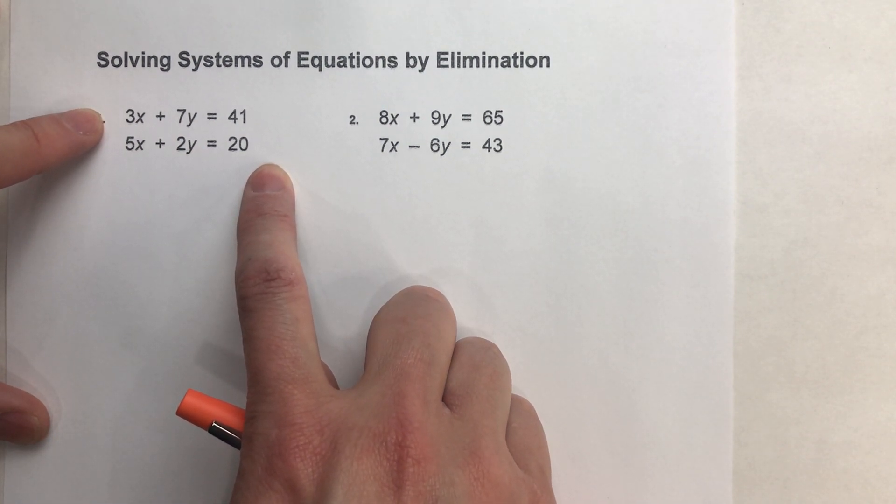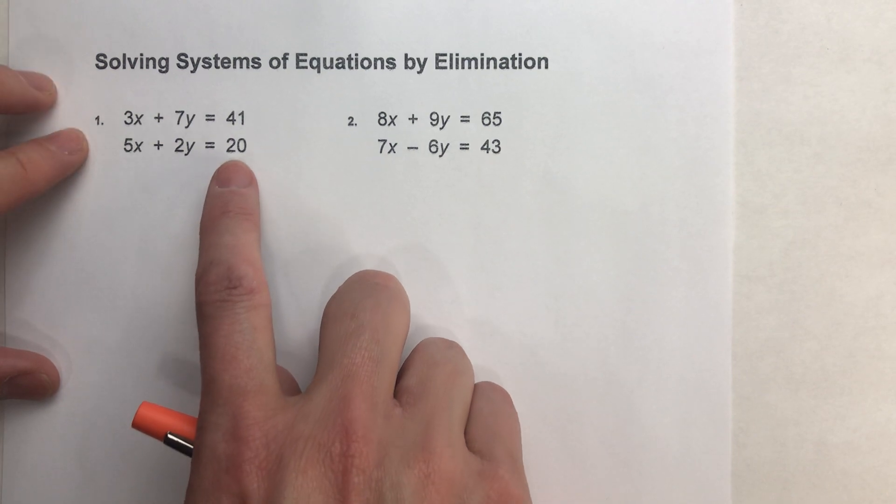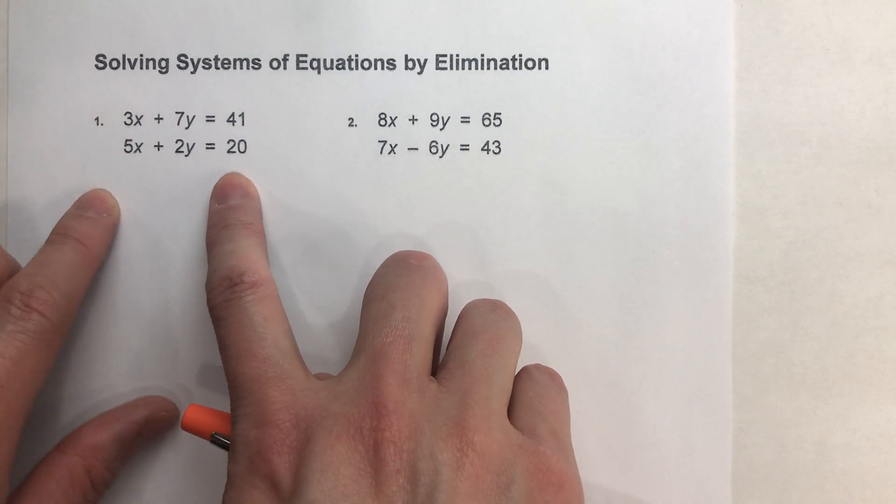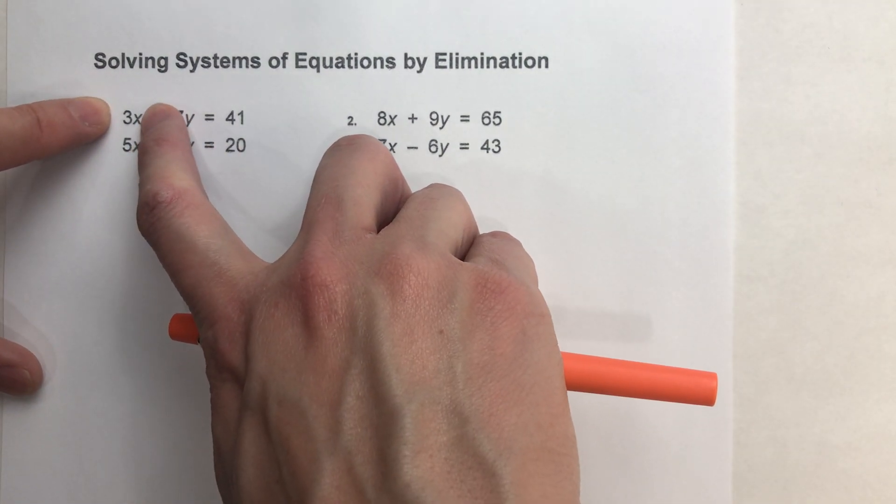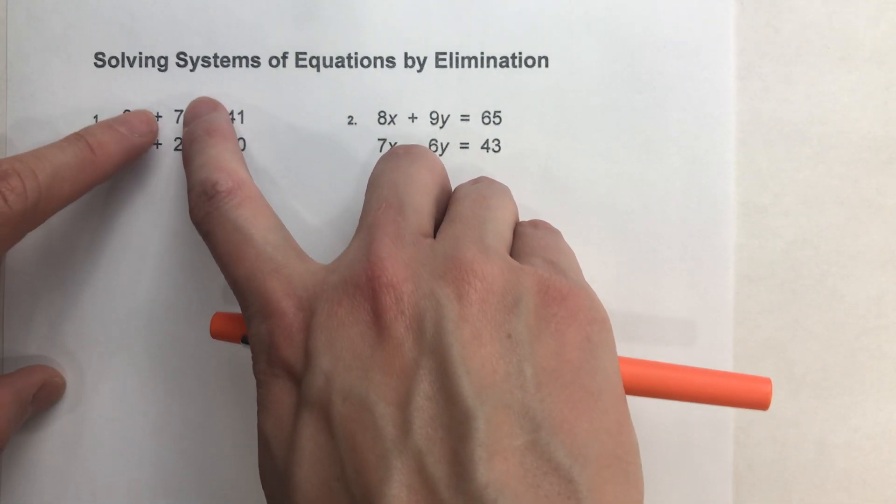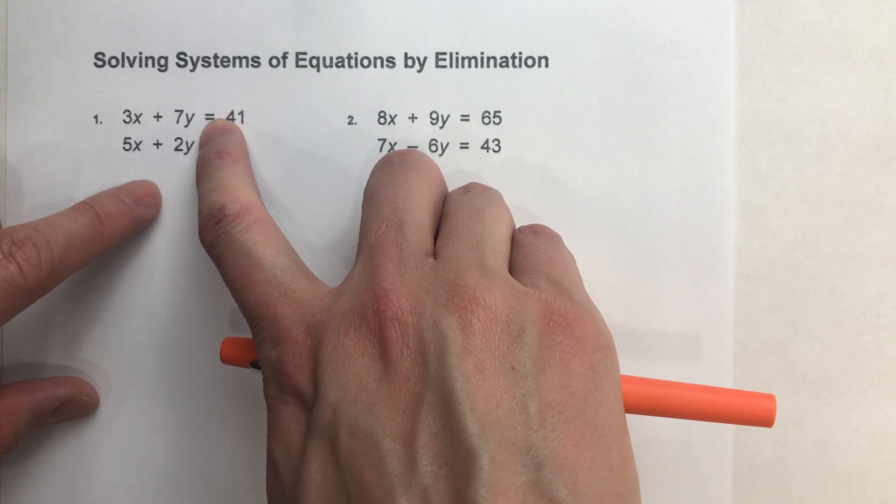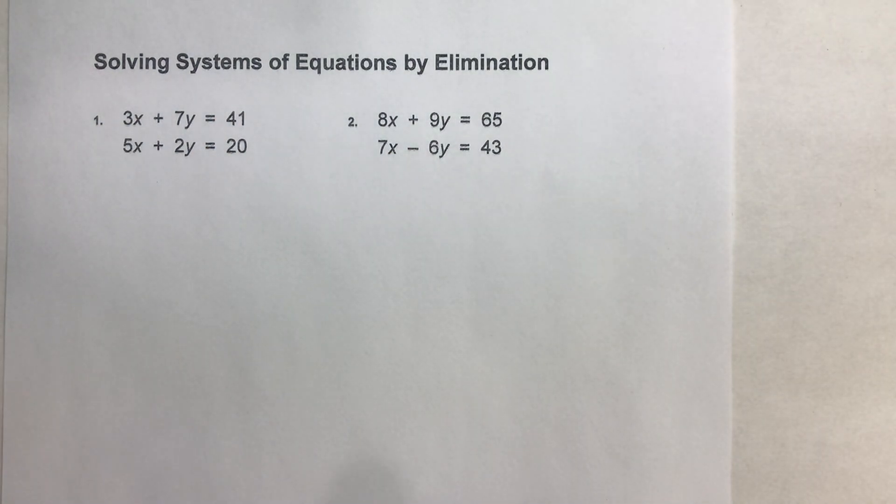But we can't do that here. Also in a previous video, I showed you a situation where we could just multiply one equation and then that situation would happen. But again, we don't have that situation here either. We can't easily multiply 3x by something to get negative 5x, and we can't easily multiply 2y to get negative 7y. We can multiply by negative 3.5, but I'm going to show you a different method instead of multiplying by decimals or fractions.